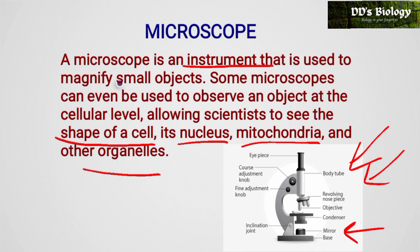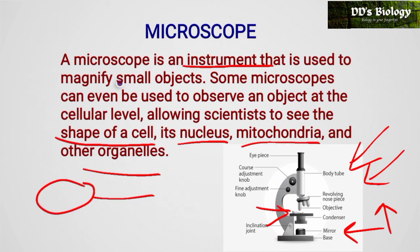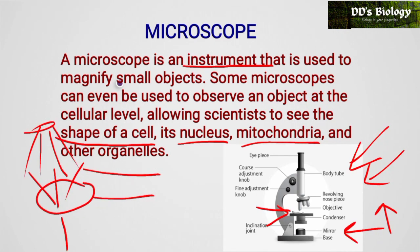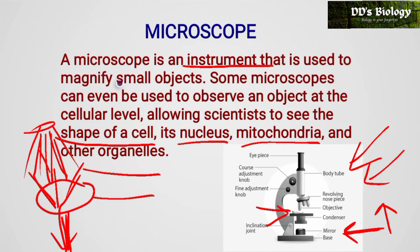Now we want to look at the specimen. We place the specimen on the stage. What is the condenser? The condenser lens produces a uniform beam of light from scattered light. So the condenser will produce a uniform beam of light focused onto the specimen.